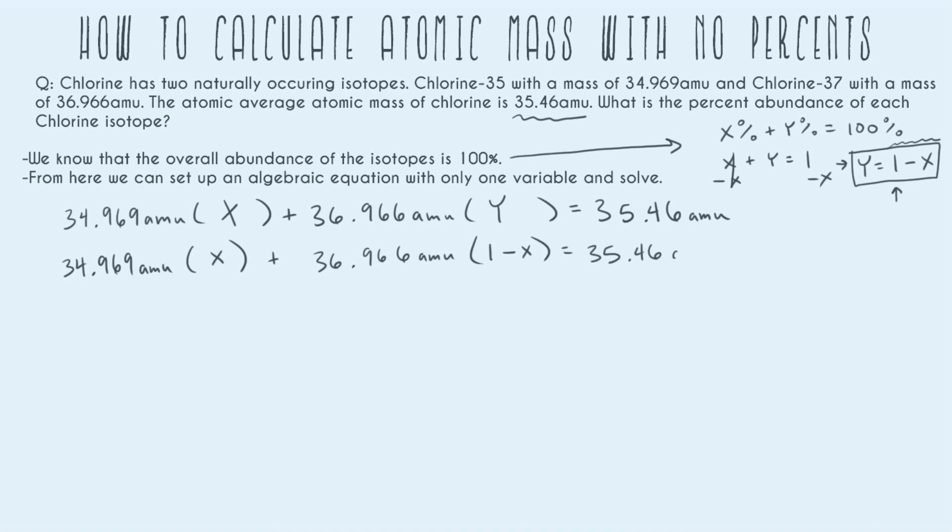And it all still equals the actual atomic mass that we already knew. So now if you've gotten to this step, all you have left to do is solve. All of the conceptual difficulty is pretty much taken care of. If you don't understand how to get to this step, make sure that you understand the easier problems first, and then go back and listen to my breakdown of X plus Y equals 1 again. But for right now, let's go ahead and solve. We have to distribute - we have to multiply this and multiply this.